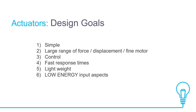How do you select the right actuator for a project? Step 1: Determine the amount of force required. Step 2: Determine the distance the actuator needs to move. Step 3: Determine the speed required. Step 4: Based on your project, choose a type of actuator.